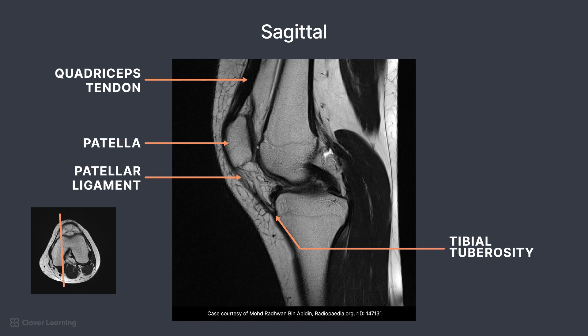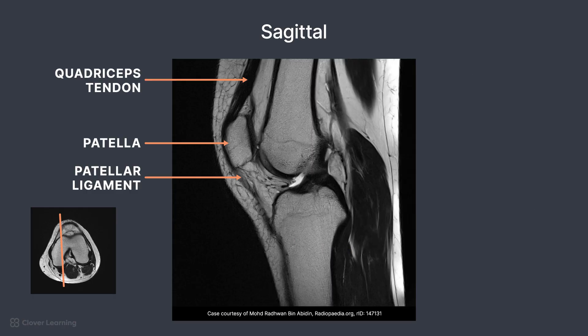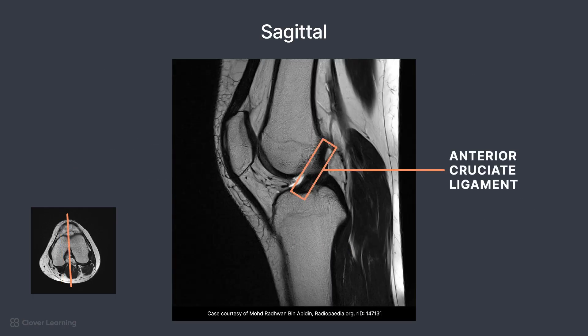Remember, tendons attach muscles to bones, and ligaments attach bones to bones. Posteriorly, the gastrocnemius muscle is seen wrapping from behind the tibia and up behind the knee joint, and the semimembranosus muscle is located behind the femur. At midline, the anterior cruciate ligament is seen connecting the femur and the tibia — this structure typically looks like a diagonal straight line.